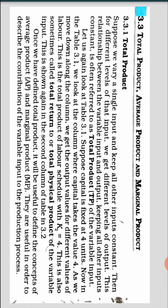For different levels of input we get different levels of output. When we change the amount of labor while keeping capital constant, the output also goes on changing. This relationship between the variable input and output, keeping all other inputs constant, is referred to as the total product of the variable input.